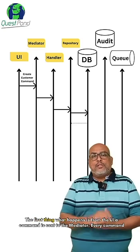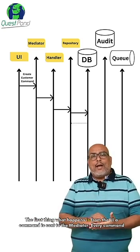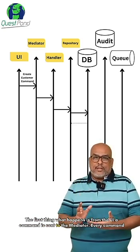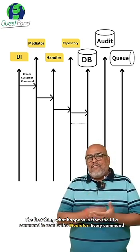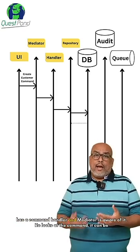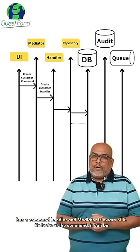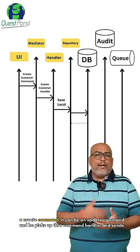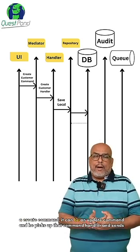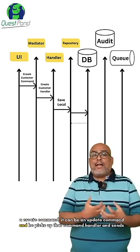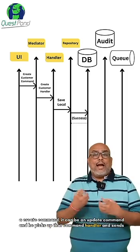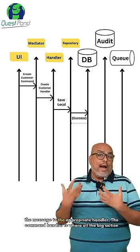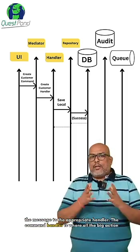The first thing that happens is from the UI a command is sent to the Mediator. Now every command has a command handler and the Mediator is aware of it. So it looks at the command — it can be a create command, it can be an update command — and it picks up the appropriate command handler and sends the message to it.